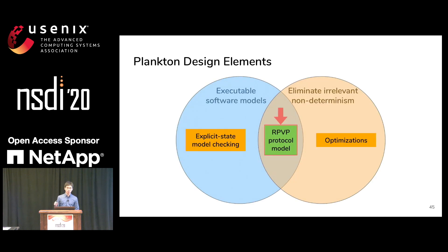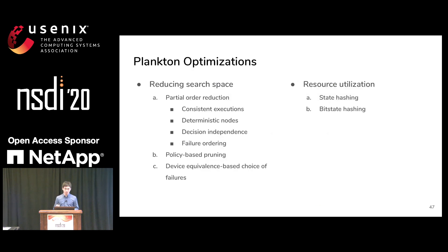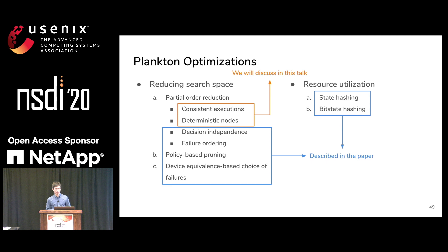With RSPVP as our protocol model implemented as an executable software model, it eliminates some irrelevant non-determinism. In addition, we propose a series of further optimizations that eliminate more irrelevant non-determinism. This is a list of optimizations implemented in Plankton. In this talk, we focus on two instances of partial order reduction; you can find the rest in the paper.